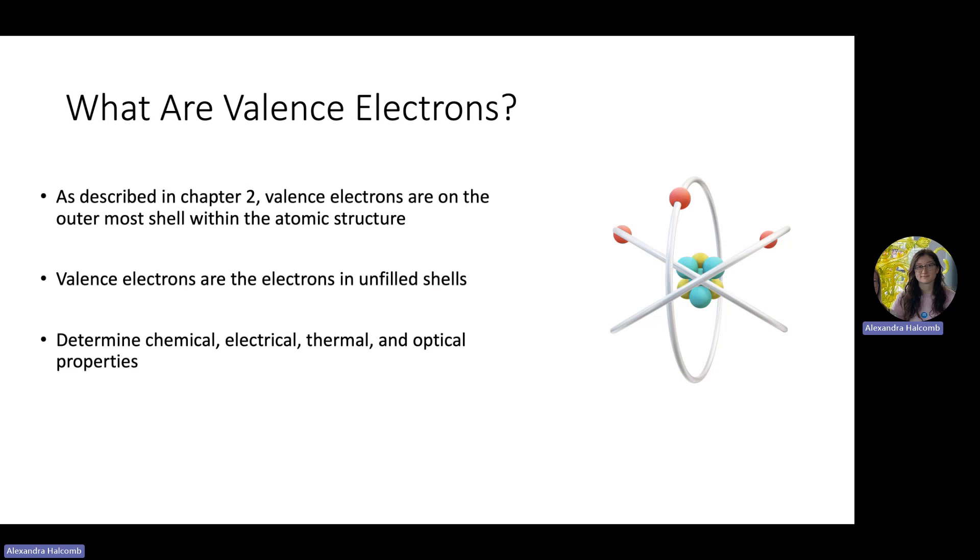So what are valence electrons? Valence electrons are the core of thermal conductivity. As described in chapter 2, valence electrons are the outermost shell within the atomic structure. Valence electrons are often a part of unfilled shells.